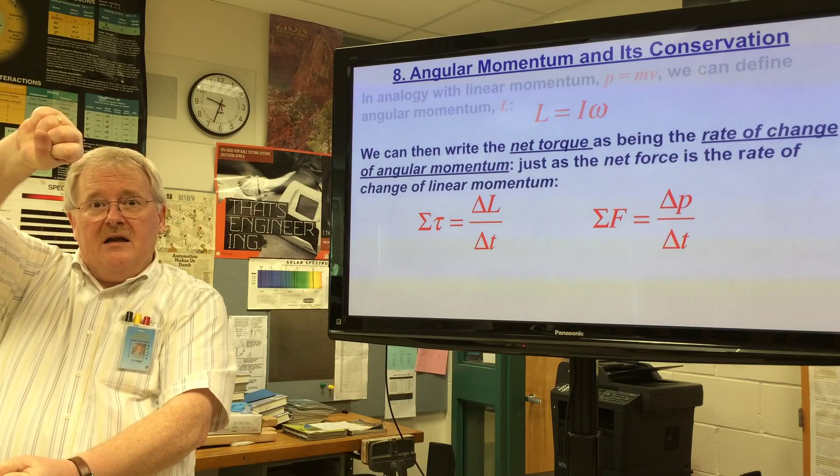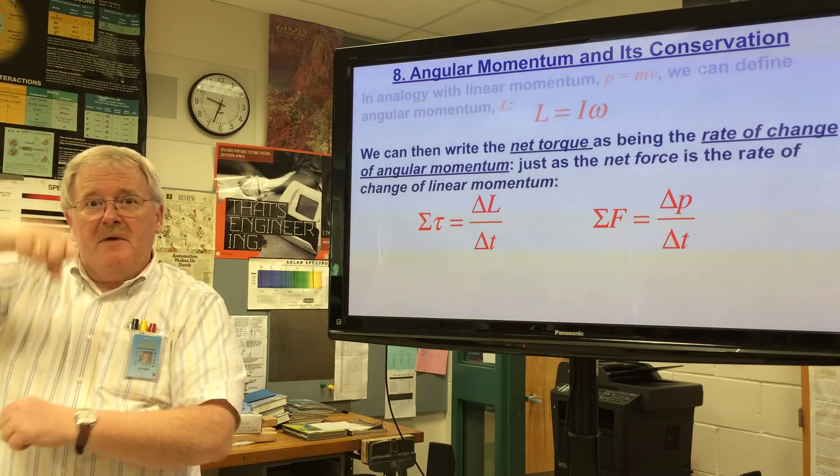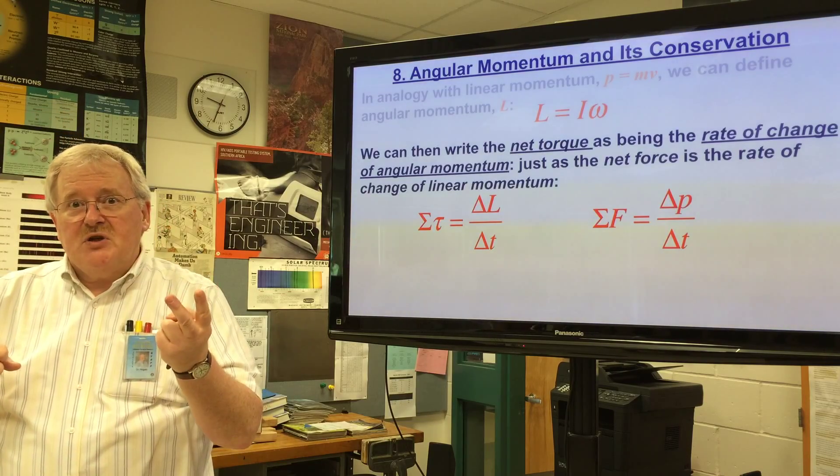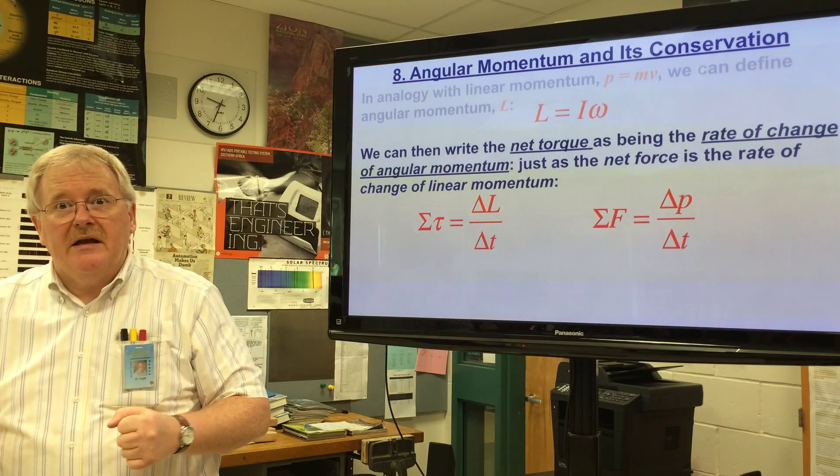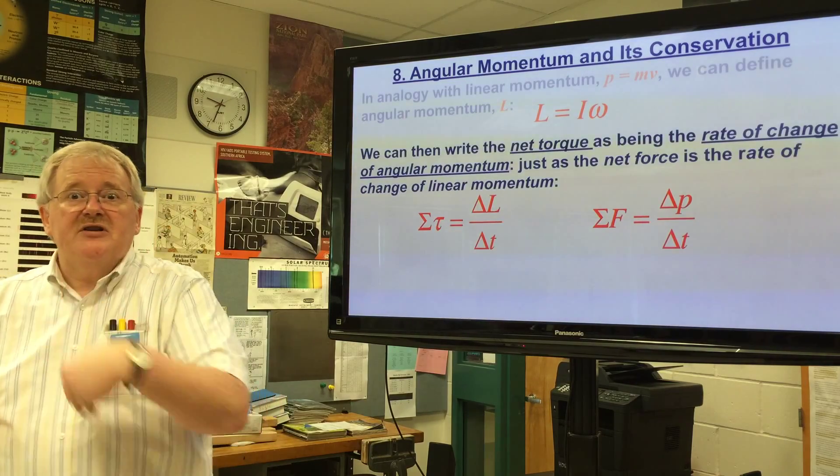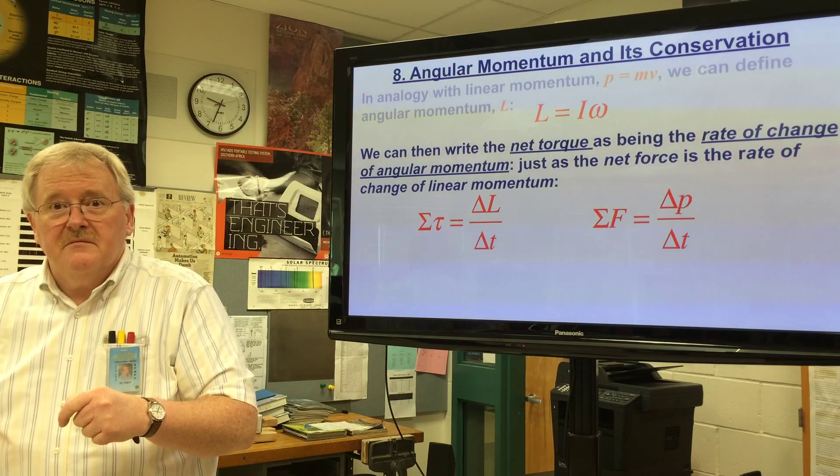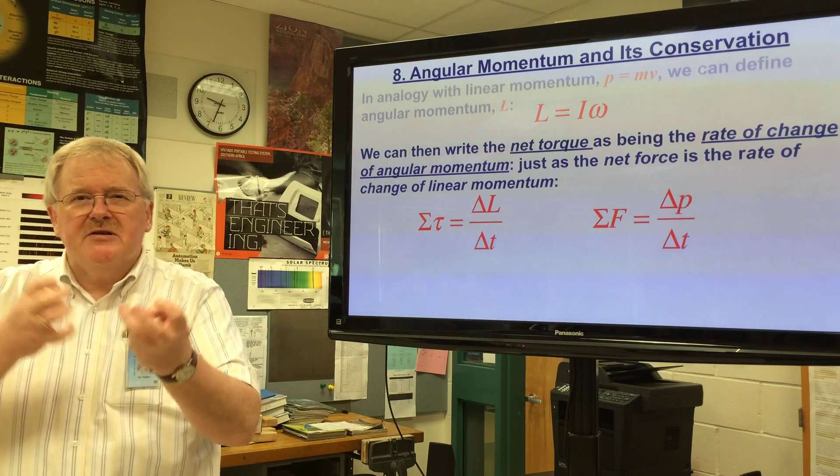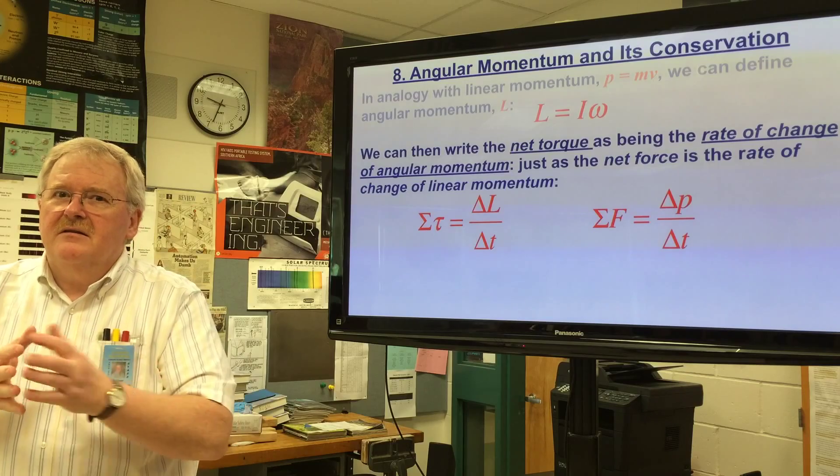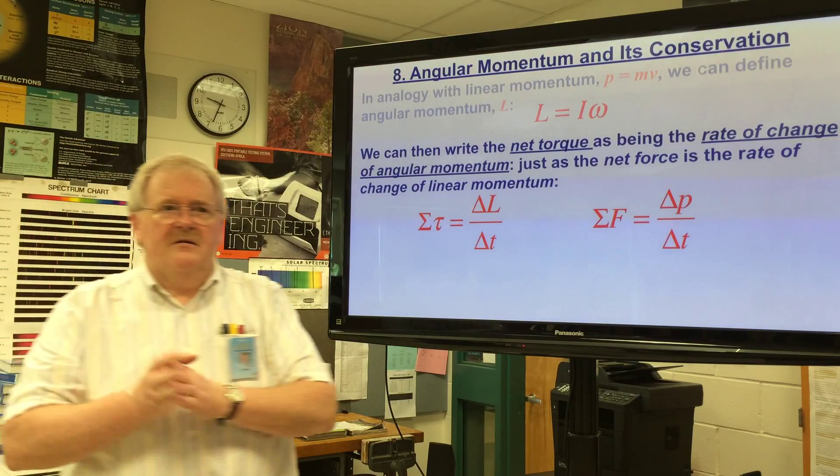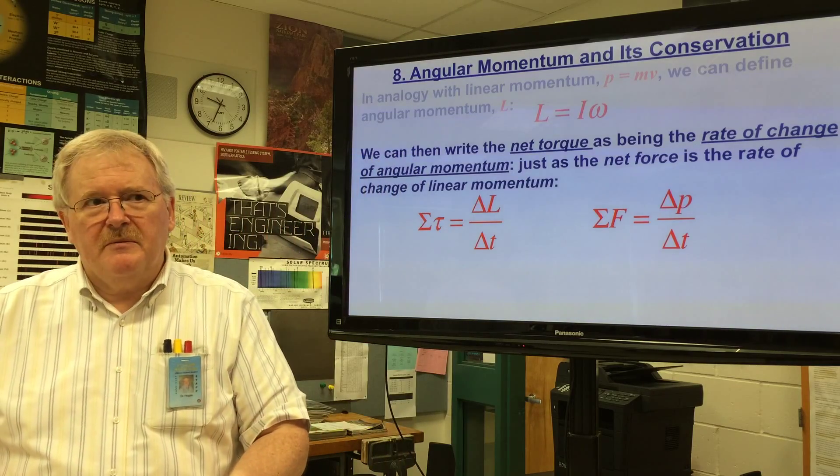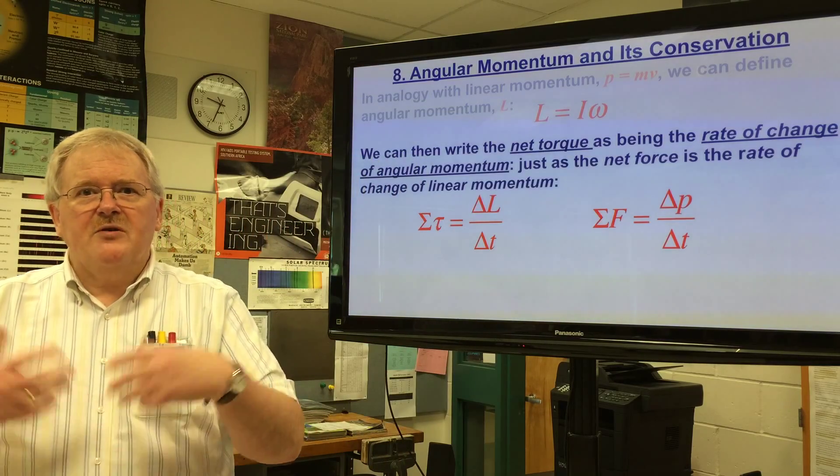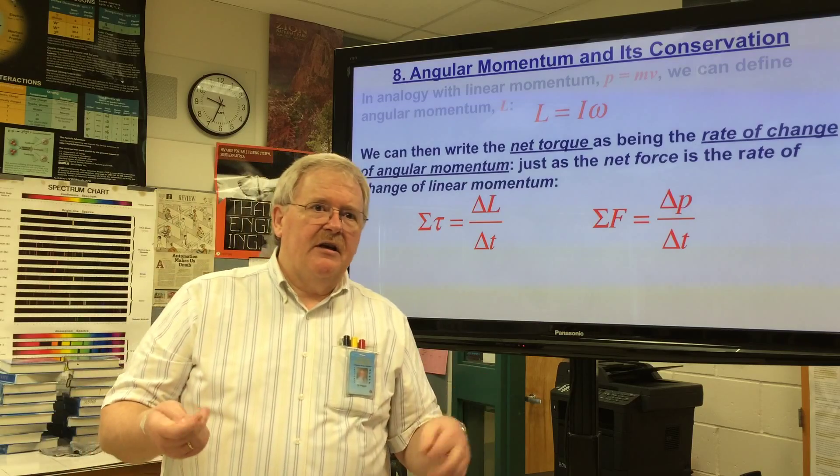One of the demonstrations I could give you is if I was standing or sitting on one of those turntables and I had the wheel going like this and I turned it exactly the other way, I would have changed the angular momentum by a factor of two, and what would have to happen is I would then have to spin the other way in order to conserve it. So angular momentum collisions are a little more tricky.